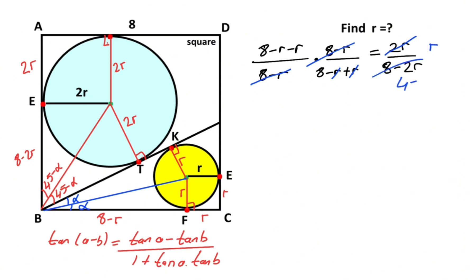Eight minus 2r over 8 minus r. Here is 4 minus r over 4 minus r. Let's simplify again.